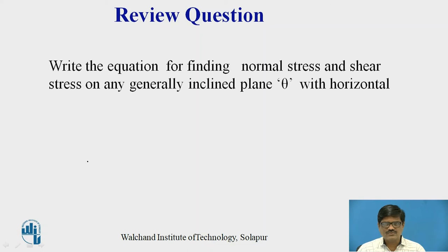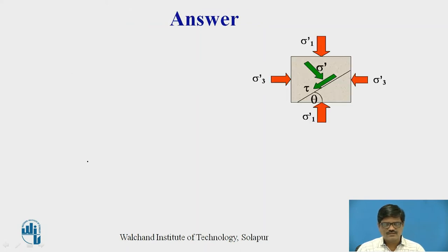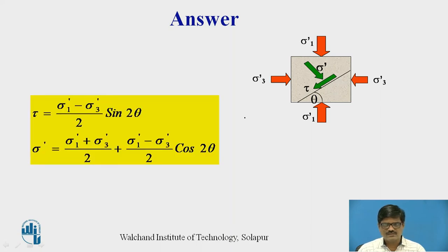Review question: quickly write the equation for finding normal stress and shear stress on any generally inclined plane theta with horizontal. Take a pause and get the answer. The answer: shear stress is given by (sigma 1 − sigma 3)/2 × sin 2theta, and normal stress is given by (sigma 1 + sigma 3)/2 + (sigma 1 − sigma 3)/2 × cos 2theta, as already discussed.